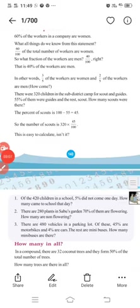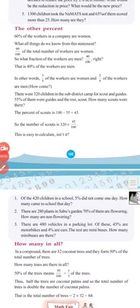Third question: there are 480 vehicles in the parking lot. Of these, 40 percentage are motorbikes and 5 percentage are cars. The rest are minibuses. How many minibuses are there?